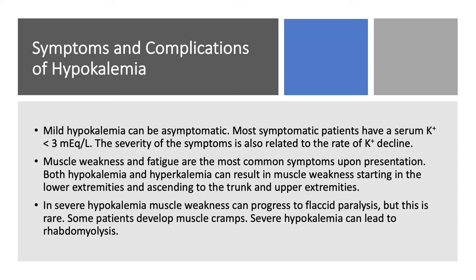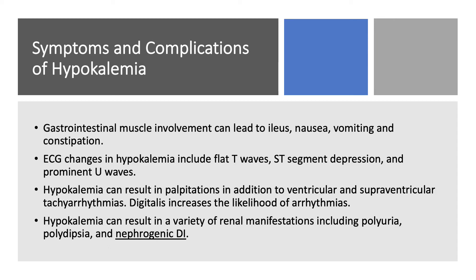Both high and low potassium can result in muscle weakness. It starts in the lower extremities and then goes up. In severe hypokalemia, you can get flaccid paralysis, though this is not really common. Also, in some severe cases, you can get rhabdomyolysis, so we have to be careful. Since hypokalemia causes muscle weakness, when this affects the GI tract, we can get ileus, nausea, vomiting, and related complications.